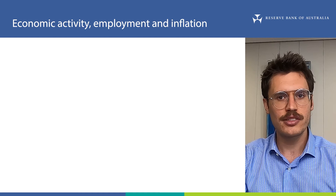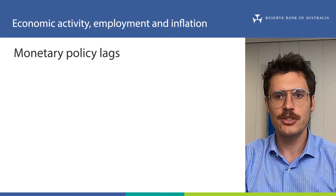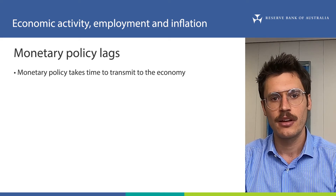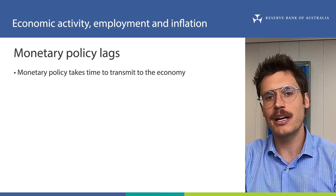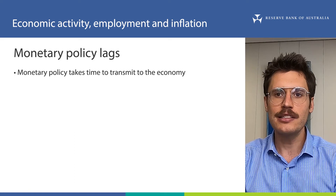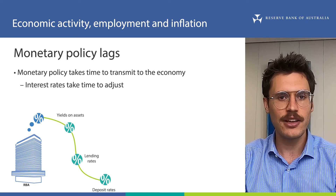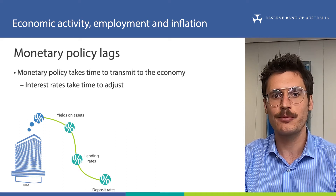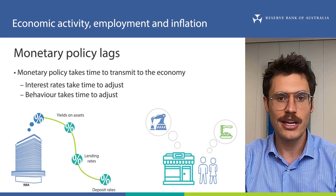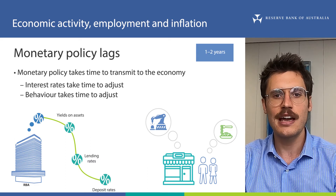To finish, there are some important things you need to keep in mind when thinking about monetary policy transmission. One is that monetary policy transmission doesn't happen instantly. Changes in monetary policy take time to work their way through the economy. In other words, there is a lag between changes in monetary policy and changes in economic activity, employment and inflation. In part, this is because not all interest rates adjust immediately after a change in monetary policy. For example, we've discussed how fixed rates do not change once they are set, until they expire. But it's also because households and businesses take a while to adjust their behaviour following a change in monetary policy. Some estimates suggest that it takes between one and two years for monetary policy to have its maximum effect.